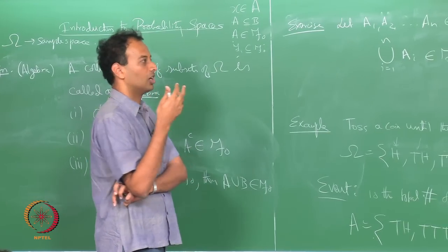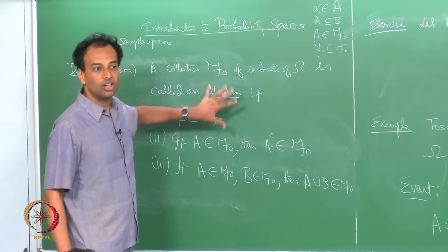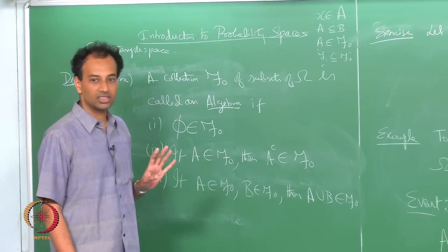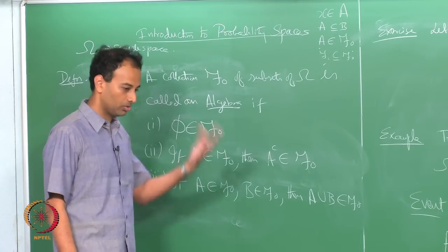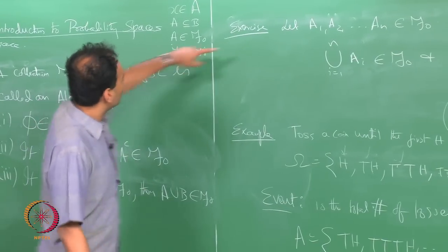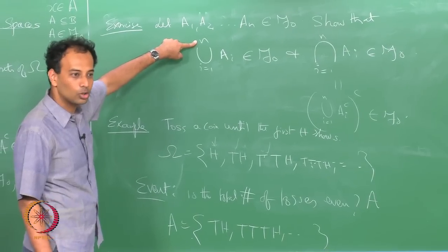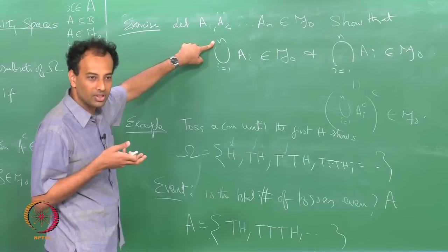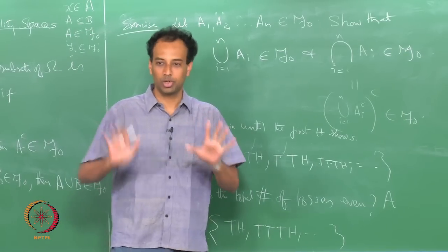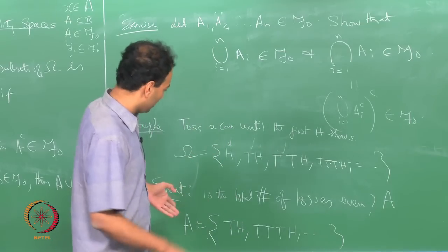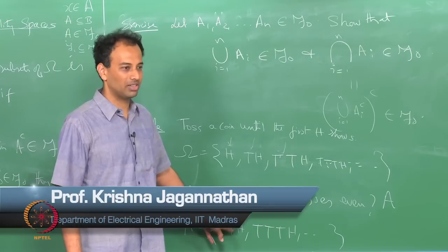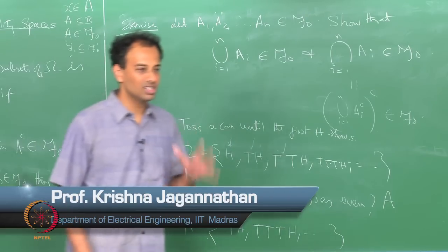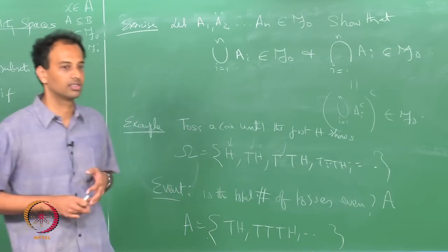This leads us to a slightly stronger structure among subsets known as a sigma-algebra, which we will cover next class. We have defined algebra today. A sigma-algebra requires closure under complementation and countably infinite unions, giving a much richer probability theory — one that allows you to model even fairly elementary events like this one that an algebra cannot capture. Probability theory operates with a sigma-algebra of subsets.